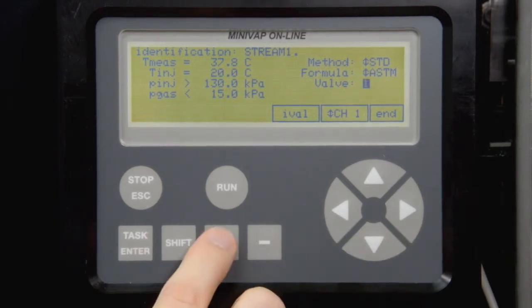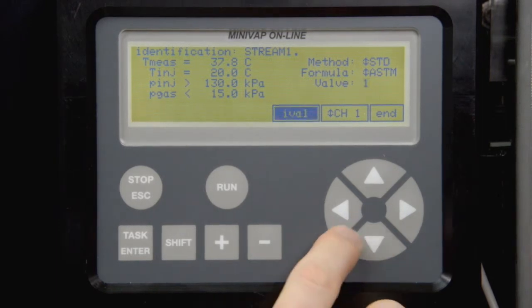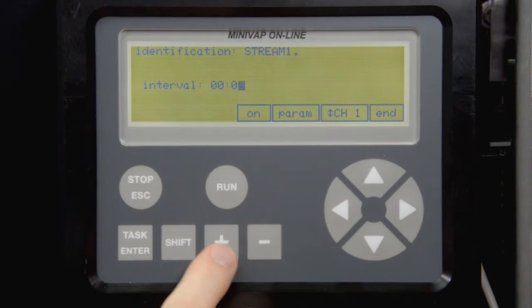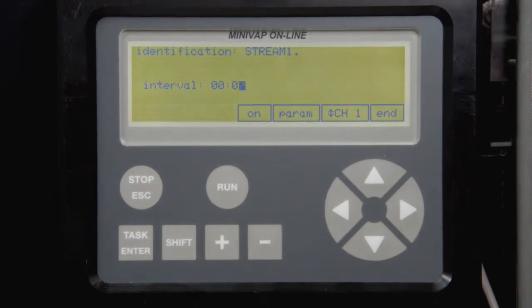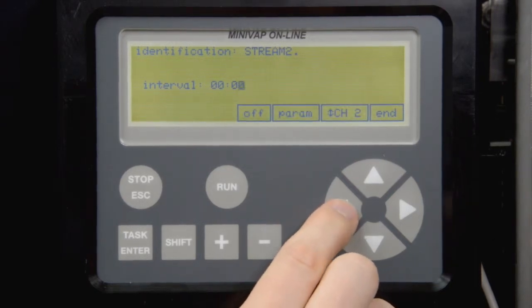Next, select the valve you want to use for this channel. Select IVAL to define the measuring interval. For a standard gasoline measurement, a 7-minute interval is required. For a V over L test, a 10-minute interval.